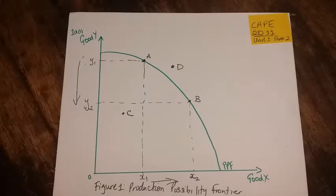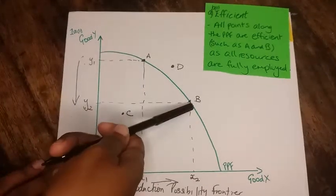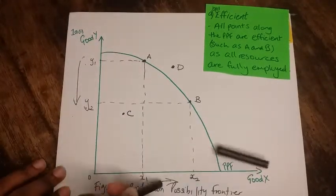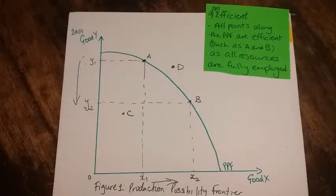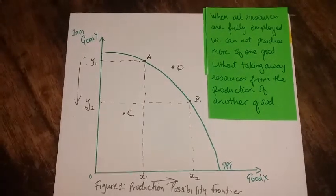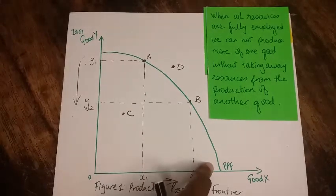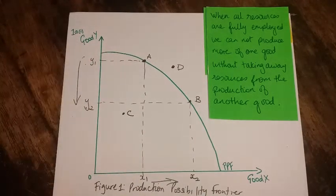All our points along the PPF are efficient. So that will be points such as A and B, or if you have any other points labeled along the curve that will be considered to be efficient, because all the resources are fully employed. And when all resources are fully employed, it means that we cannot produce more of one good without taking away resources from the other. So when we needed to move from, let's say, point A to point B, meaning we need to get more of good X, we had to give up some Y. So that's how you know when you are at an efficient point: it's impossible to get more of one type of good without giving up from the other.